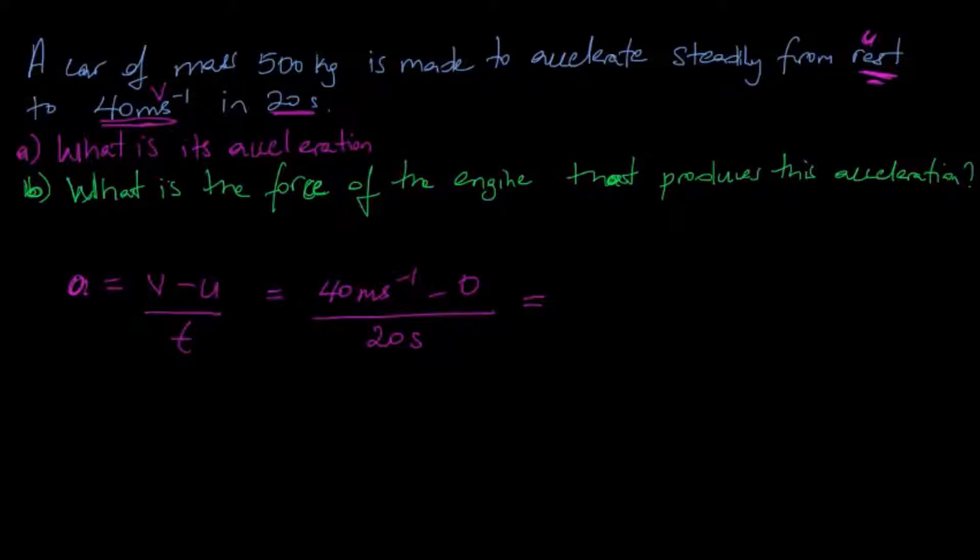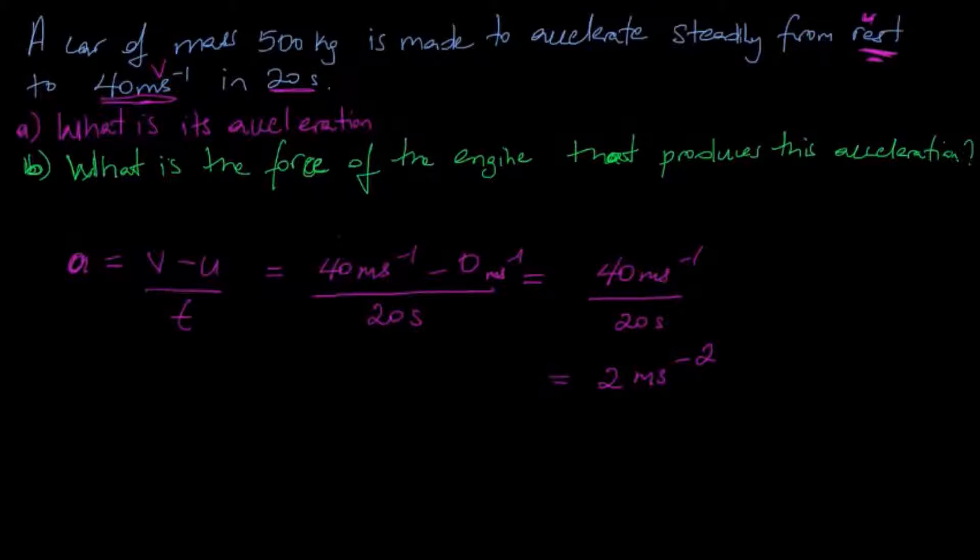That left us with 40 meters per second minus zero meters per second, which equals 40 meters per second, and all of that is divided by the time which is 20 seconds. Working this out, we get the acceleration equaling 2 meters per second squared.